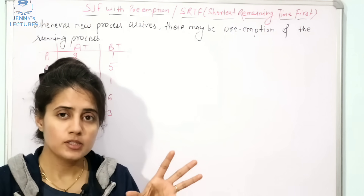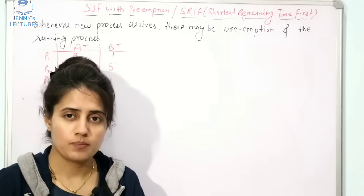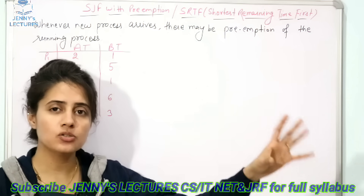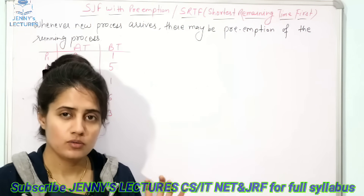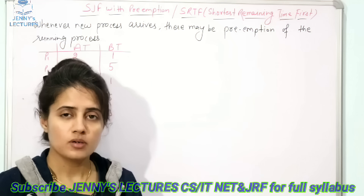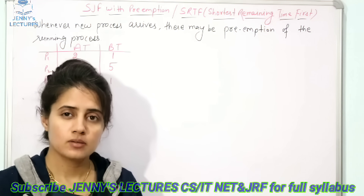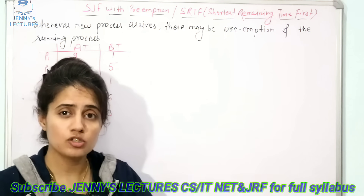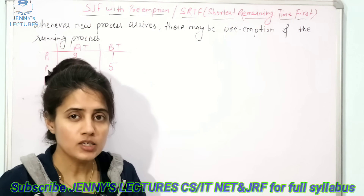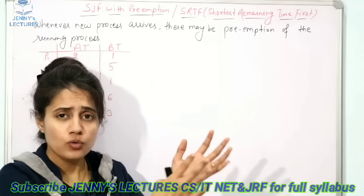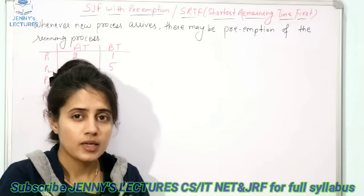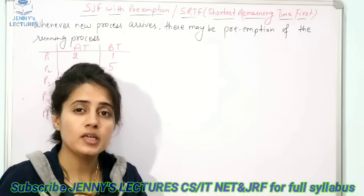In SJF, we pick the job from the ready queue which has the smallest burst time. We allocate the CPU to that process, and in non-preemption that process continues its execution till its termination. You cannot forcefully remove that process from the CPU in between. But in the case of preemption, you can remove that process while it is executing, before its termination. The condition for removal is: if the newly arrived process has a shorter burst time than the remaining burst time of the currently running process.